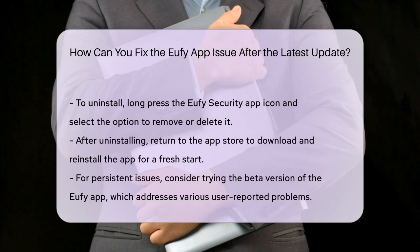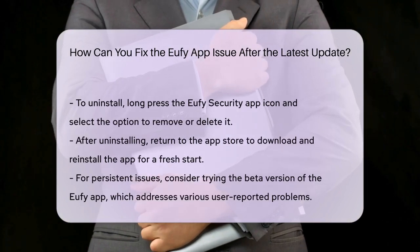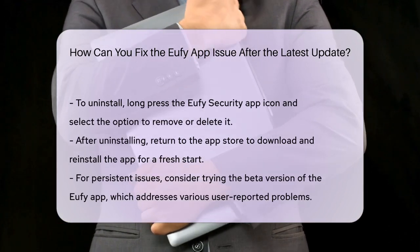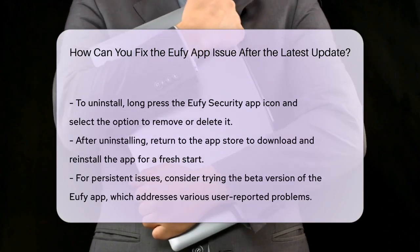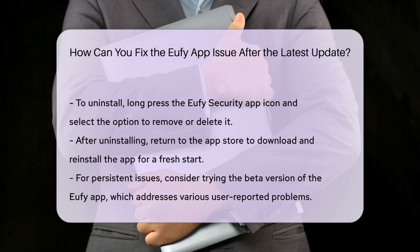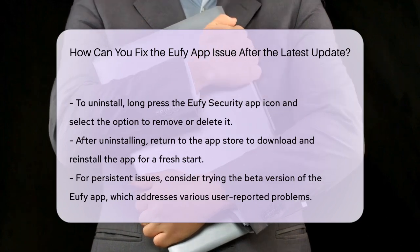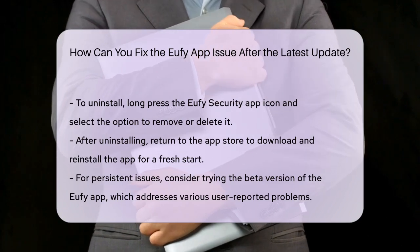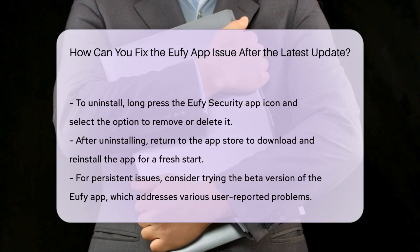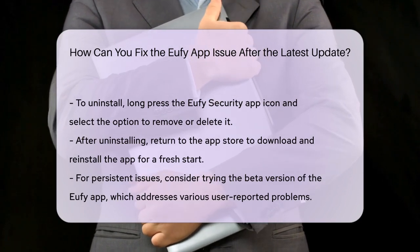For those who are still having trouble, there is a beta version of the Eufy app available. This version has addressed a number of issues reported by users. To try the beta, you'll need to uninstall the current Eufy Security app, then download and install the beta version from the provided links. Keep in mind that this is a beta version, so you might encounter some minor issues, but the developers are actively working to address any feedback.